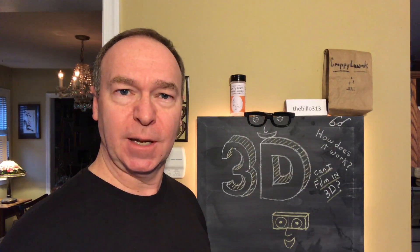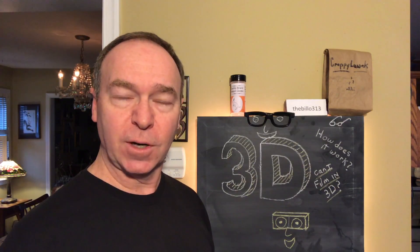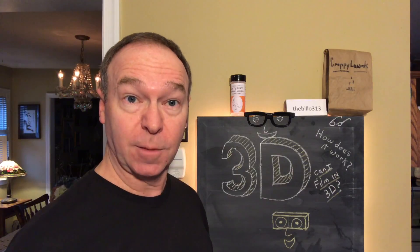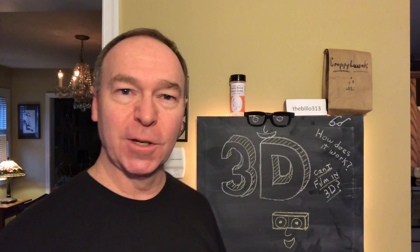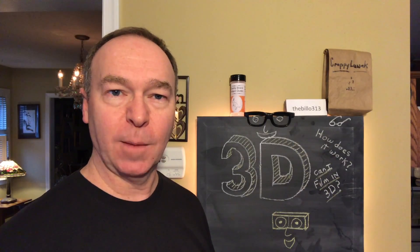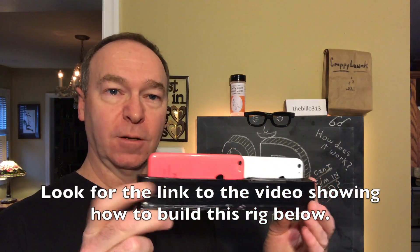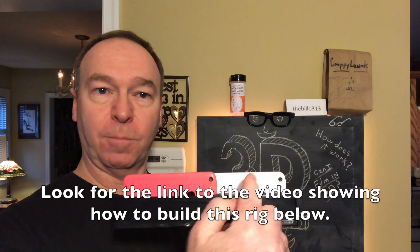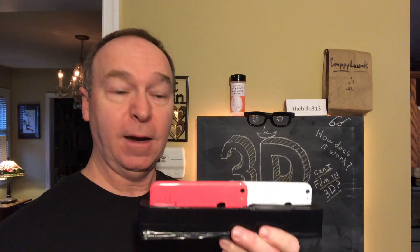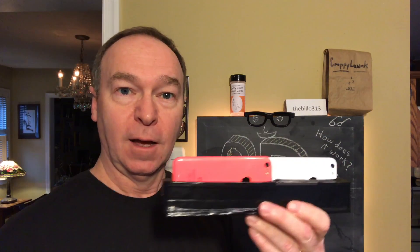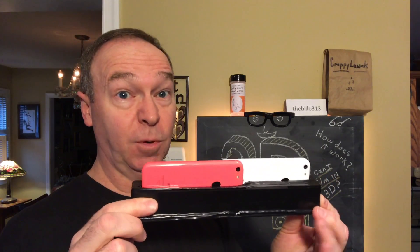3D cameras do the same thing. They actually have two separate cameras that are about three or four inches apart, which is about the distance your eyes are from each other, and they create two different perspectives. If you want to record something in 3D, you'll need two cameras. I have here two old iPhones rigged up at the proper distance apart — about the same as my eyes — and with this I can record 3D. I'll have a link down below showing you how to make this very simple rig.